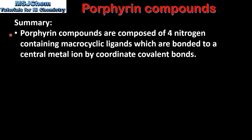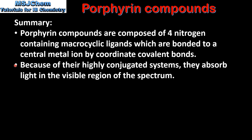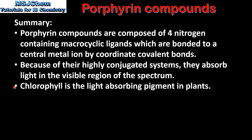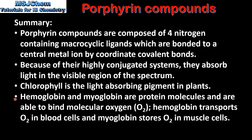To summarise: porphyrin compounds are composed of four nitrogen-containing macrocyclic ligands which are bonded to a central metal ion by coordinate covalent bonds. Because of their highly conjugated systems they absorb light in the visible region of the spectrum. Chlorophyll is the light-absorbing pigment in plants. Hemoglobin and myoglobin are protein molecules able to bind molecular oxygen. Hemoglobin transports oxygen in blood cells and myoglobin stores oxygen in muscle cells.